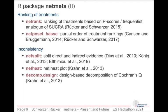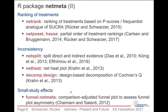Evaluation of consistency can be done using NetSplit, which splits the network estimates into direct and indirect evidence and looks at whether they are similar or not. The net-heat plot is also available, along with a design-based decomposition of Cochrane's Q. Finally, comparison-adjusted funnel plots are implemented along with a test for funnel plot asymmetry.